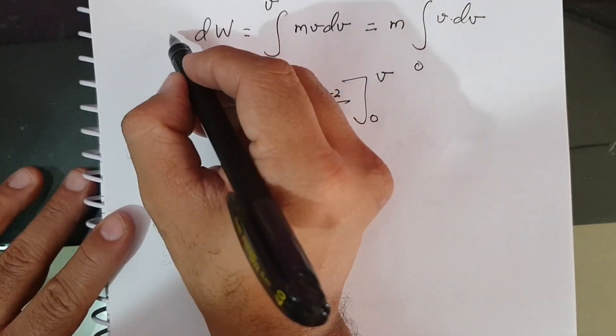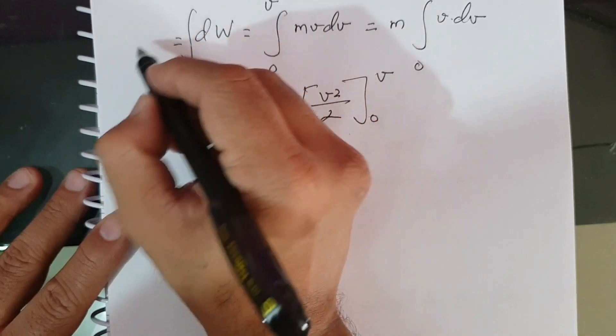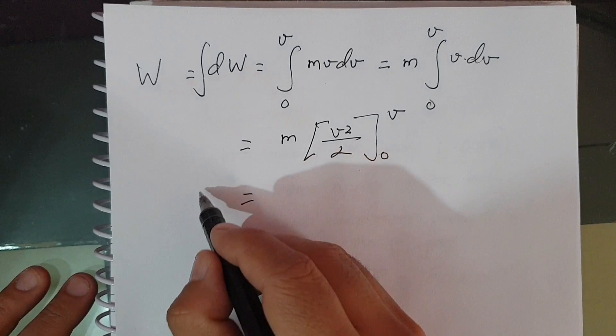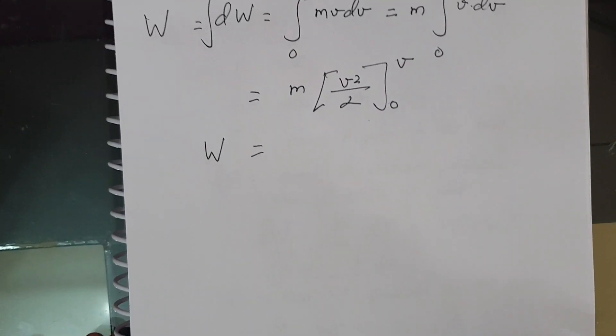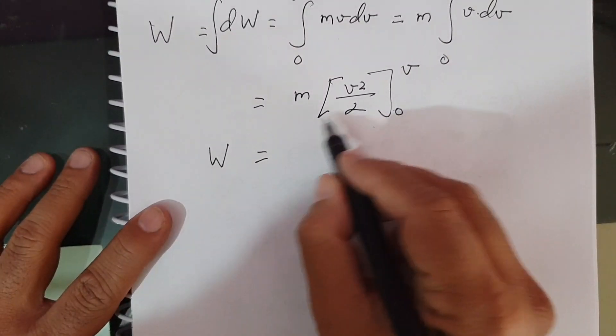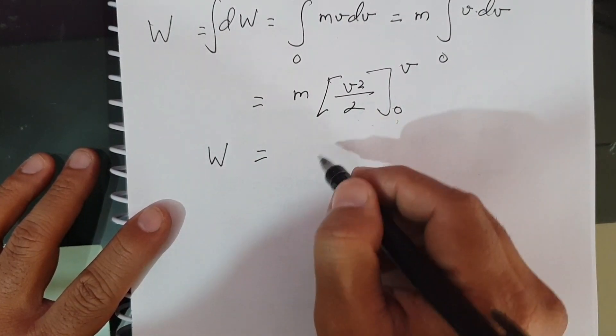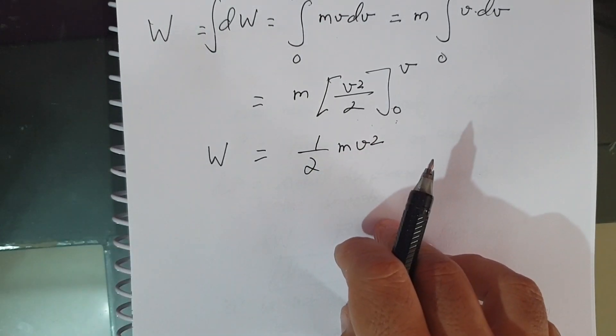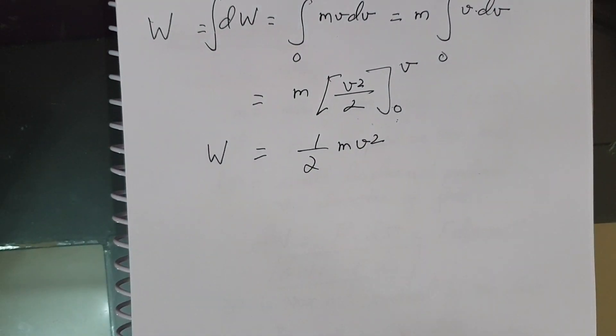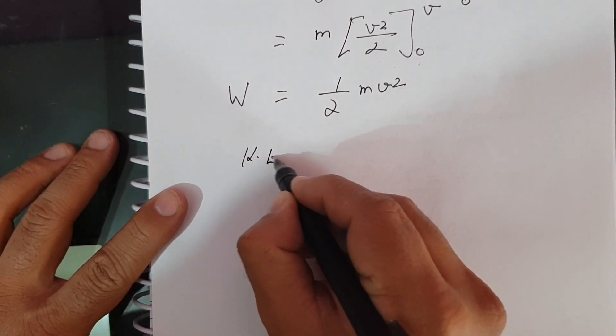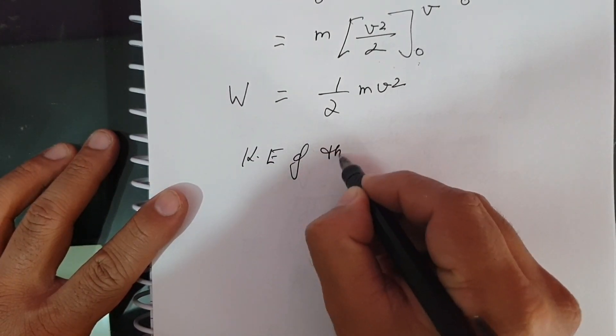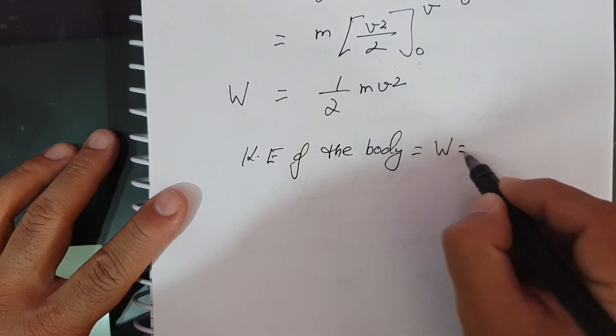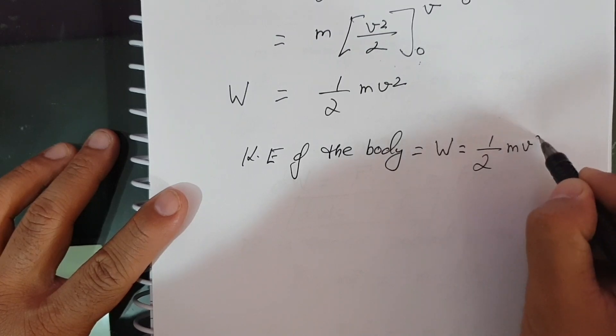This will be W. So this W will be V squared by 2 evaluated from 0 to V, which is half M V squared. W equals half M V squared, which is actually the kinetic energy of the body.